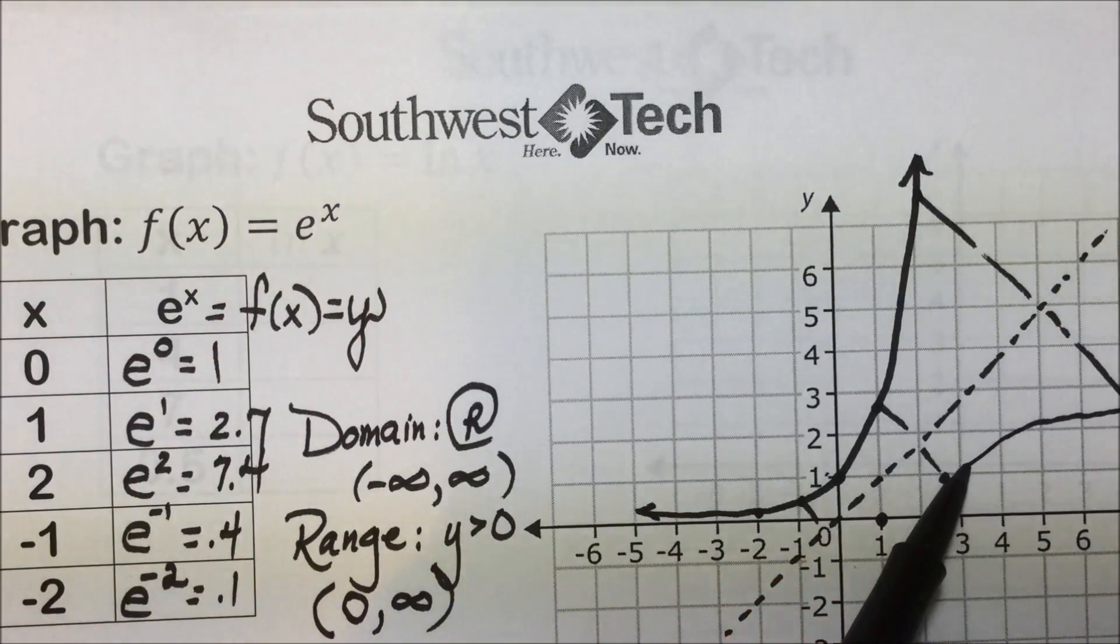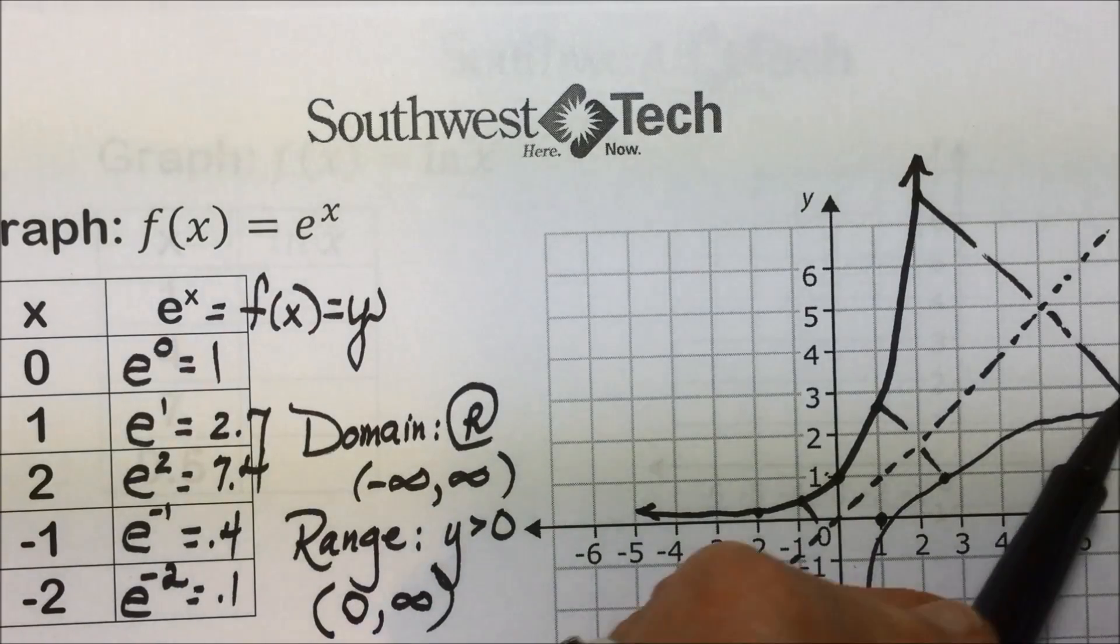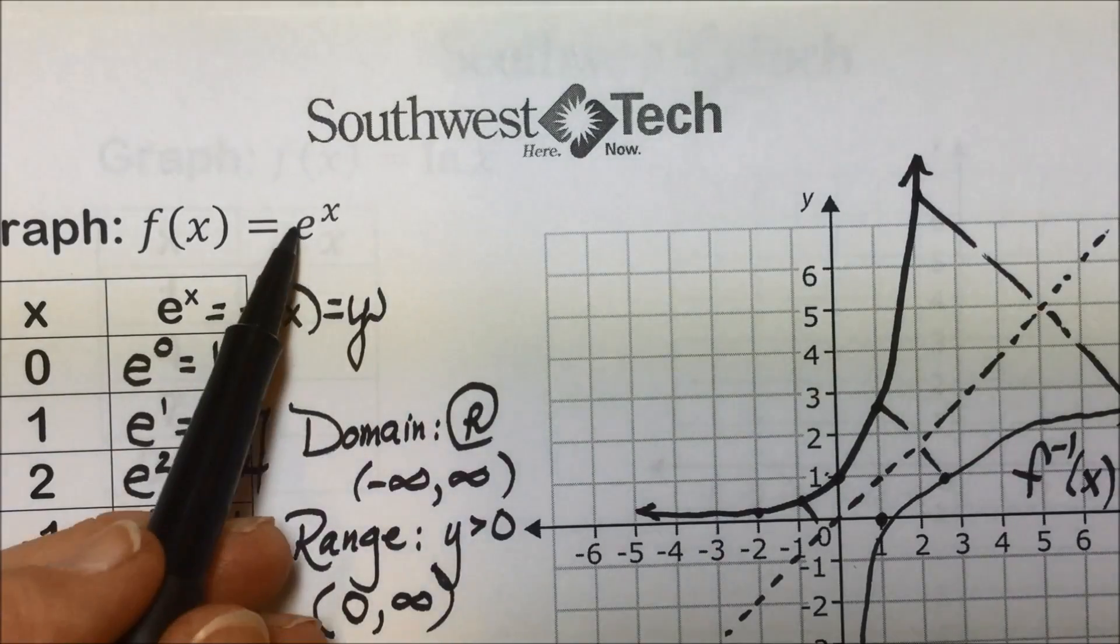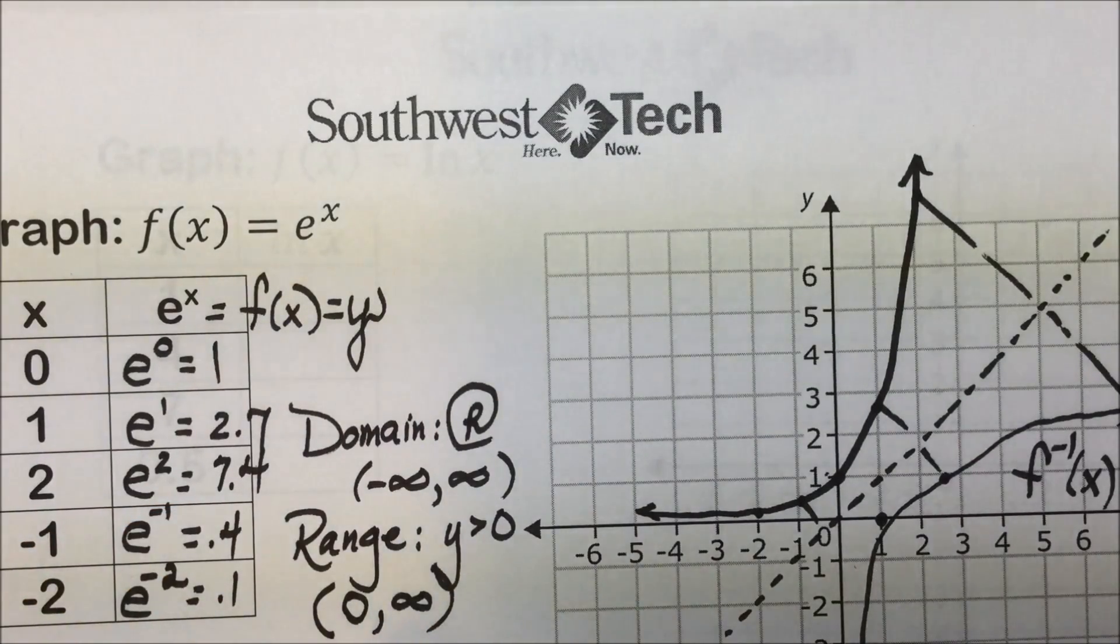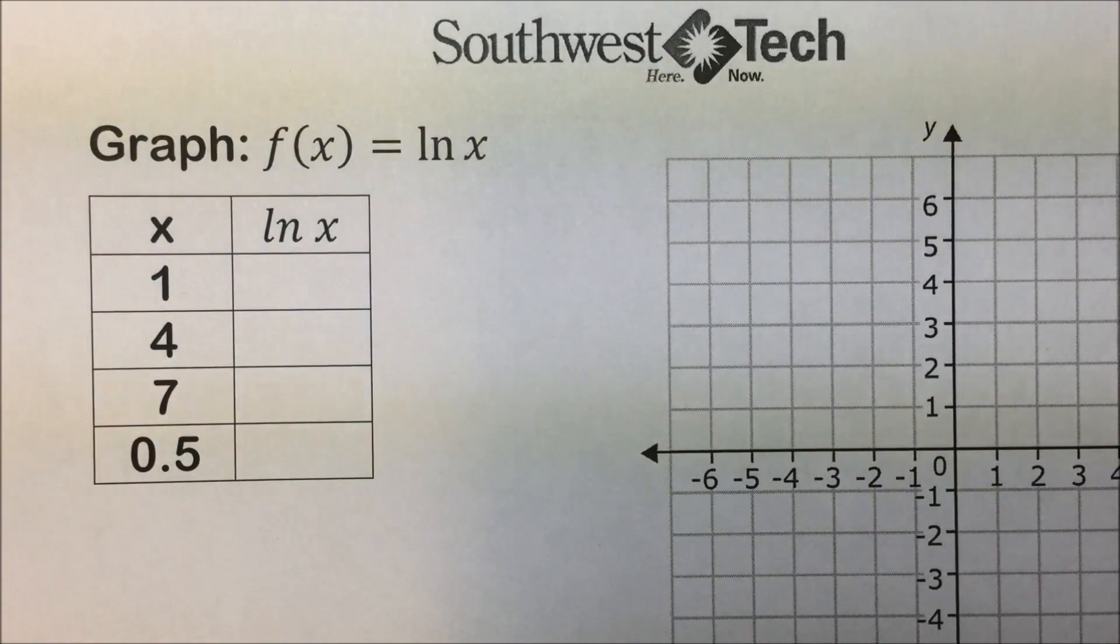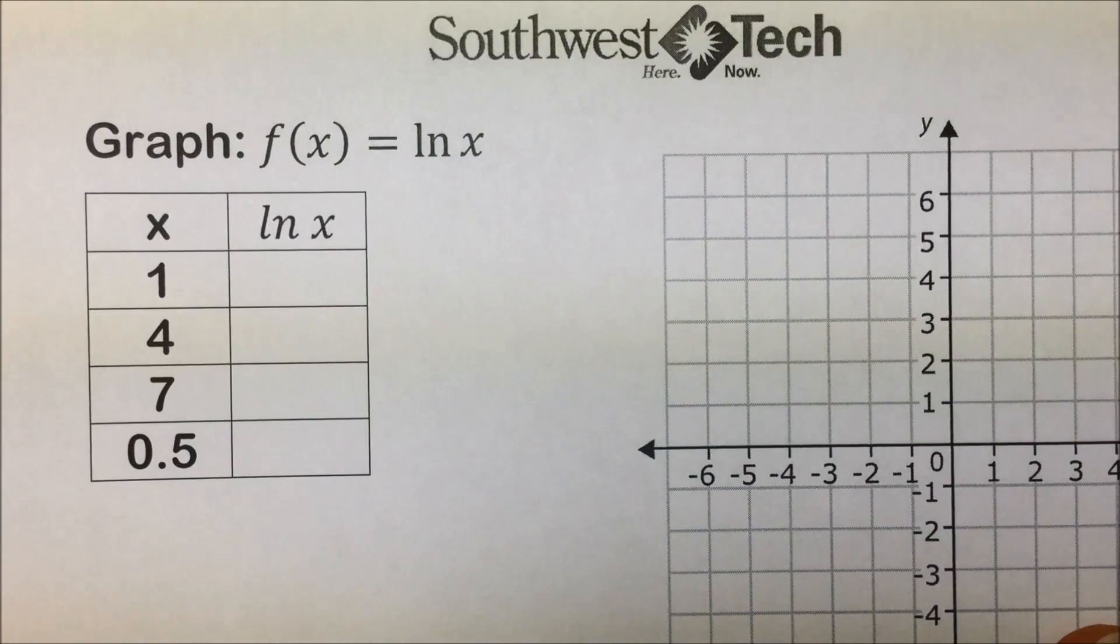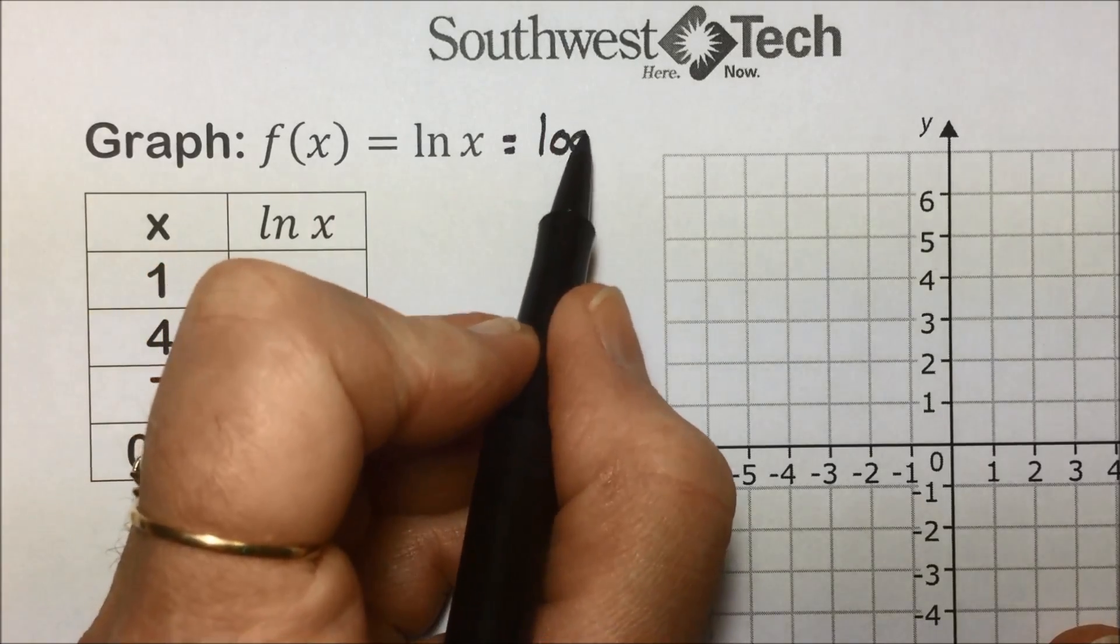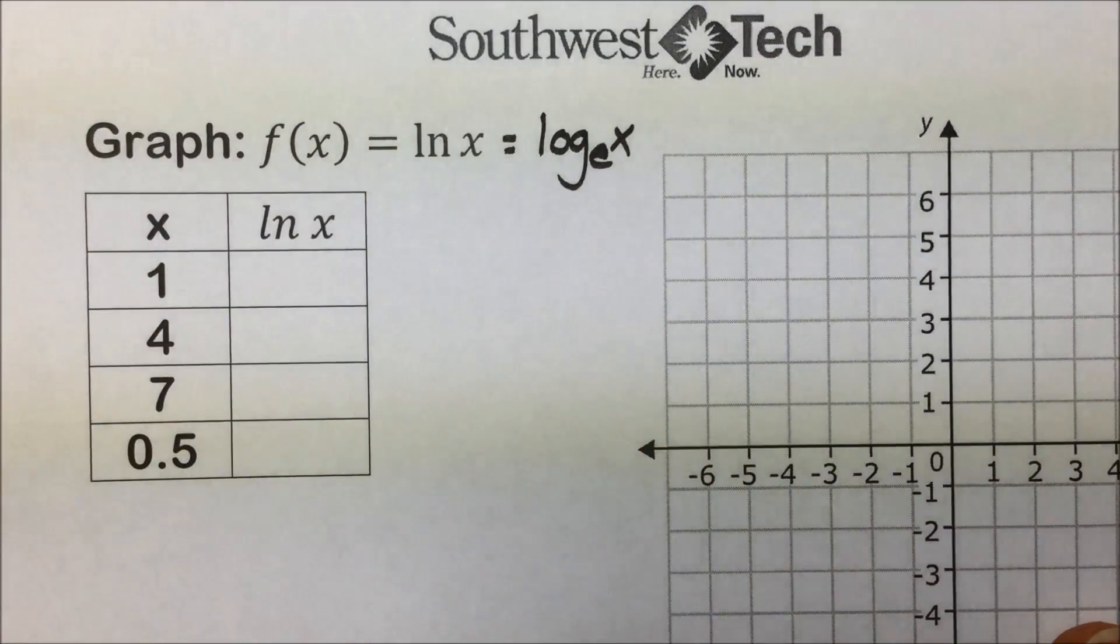I believe we will find the inverse of our function f of x equal to e to the x to look something like this, and that inverse function is this function that's given here. The natural log ln of x is shorthand for log base e of x is the inverse, and we'll see if we do get that graph that I just drew in as the reflection of e to the x.